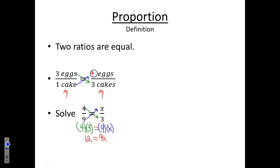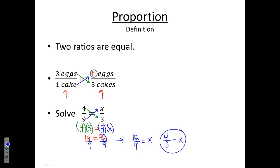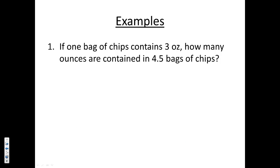Now to solve, I want to get x by itself. Since nine and x are being multiplied, I do the opposite — division. I divide both sides by nine, giving me twelve over nine equals x. Twelve over nine reduces: three goes into both. Three goes into twelve four times, and three goes into nine three times. So my answer is four-thirds. To summarize: to solve a proportion, you just cross-multiply.